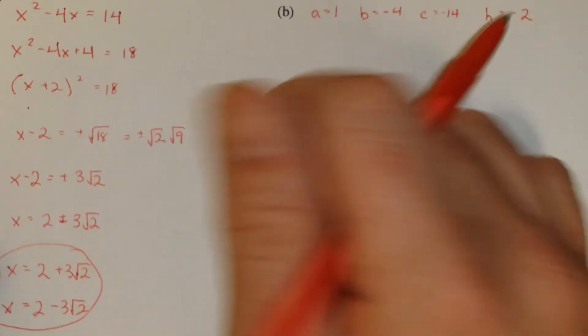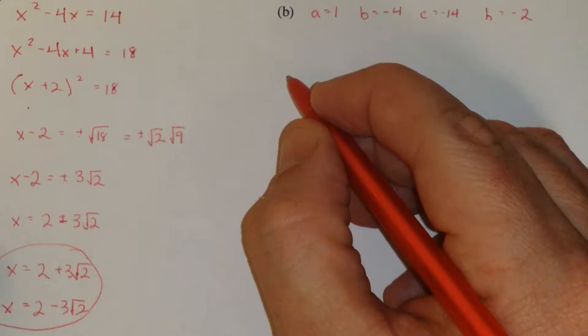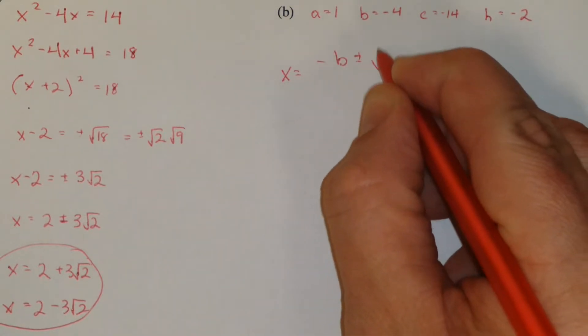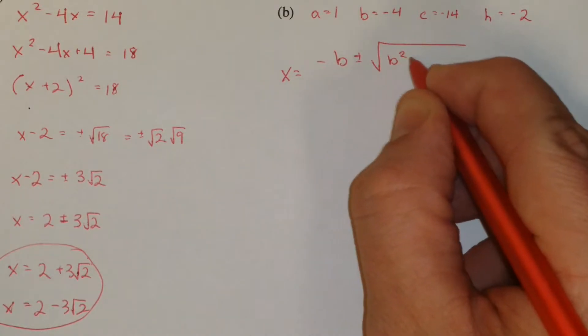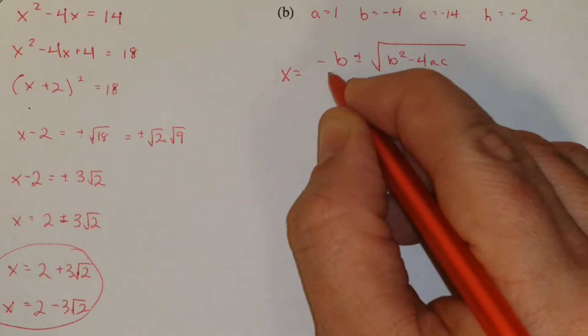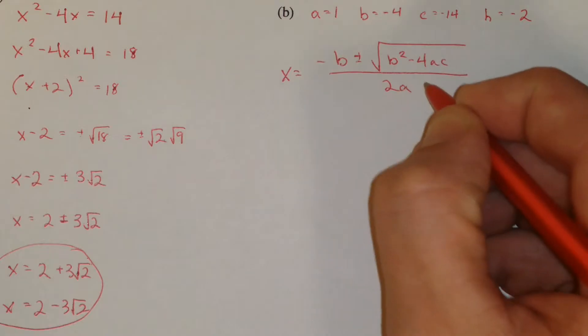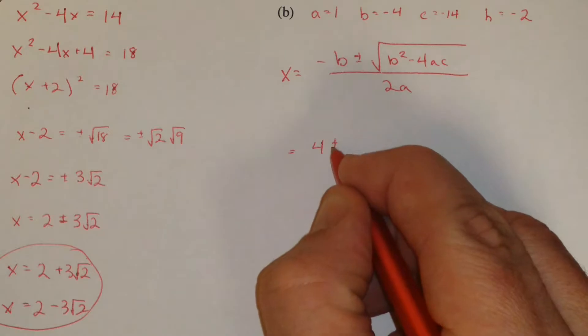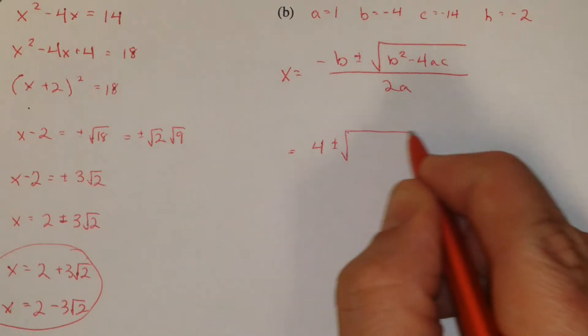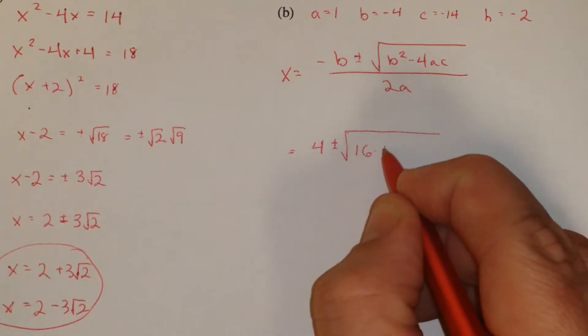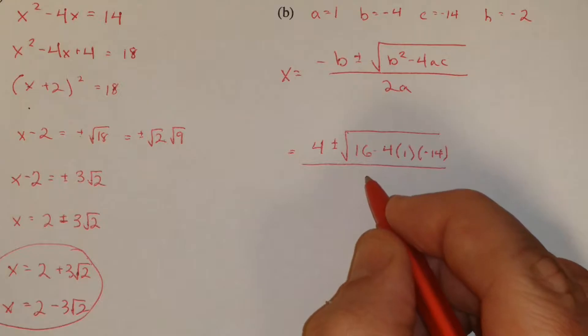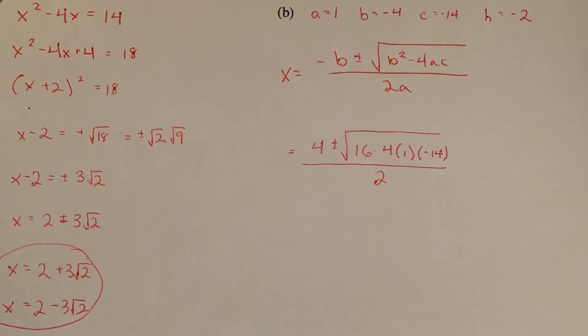So the quadratic formula says x is negative b plus or minus the square root of b squared minus 4ac all over 2a. So negative b would be 4. b squared would be 16. a is 1. c is negative 14. 2a is 1.